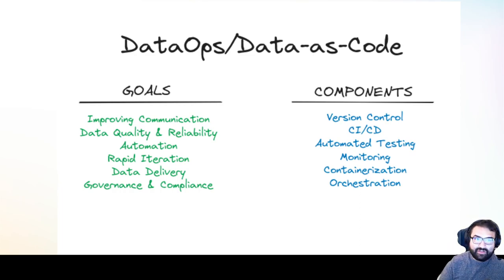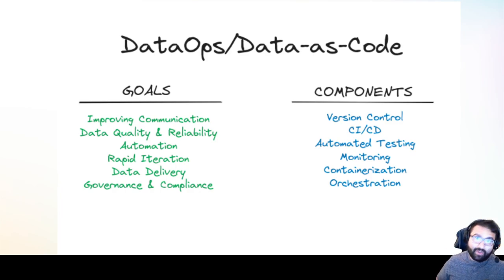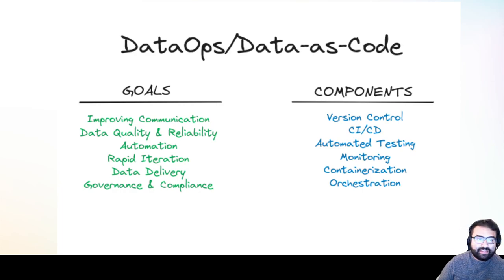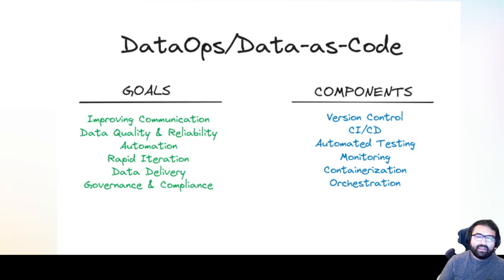Terms for this trend include data ops and data as code — all referring to the idea of taking code quality practices and making them data quality practices. The goals of doing this include improving communication, making sure people can know the status of data, what data is what. Improving documentation, visibility, discoverability, data quality and reliability — making sure you can trust that the data is good because it's gone through the right kinds of tests. Being able to automate these processes so you don't have to spend as much manual time on them. Doing it in a flexible way that allows for rapid iteration.